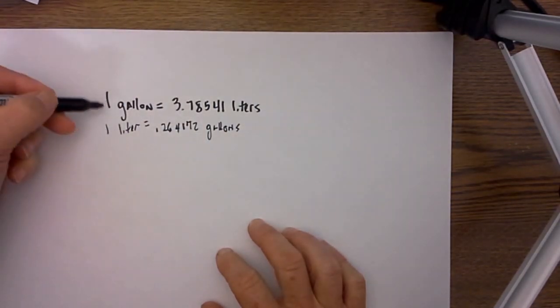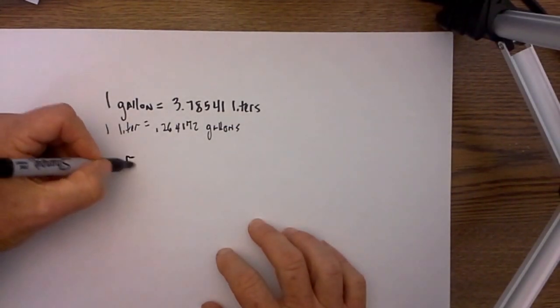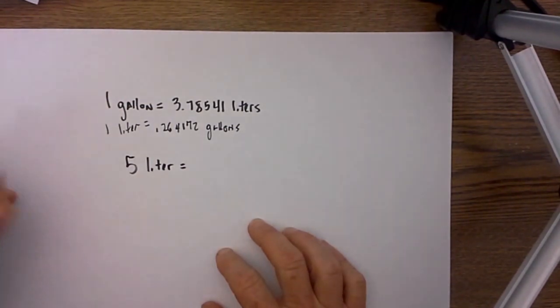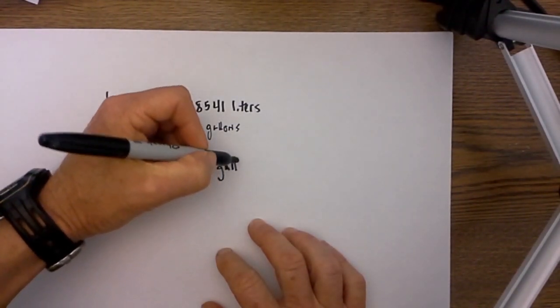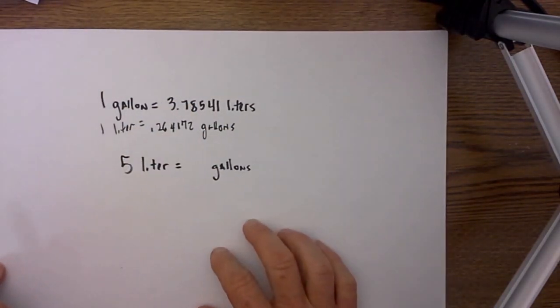Obviously a gallon is larger than a liter, so let's go ahead and start with one. Say you have a 5 liter beverage and you would like to know how much that is in gallons because you don't think in terms of liters, you think everything in gallons.